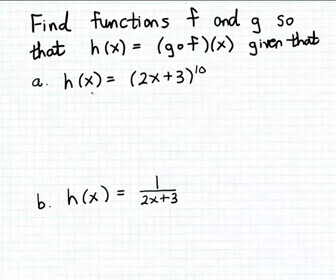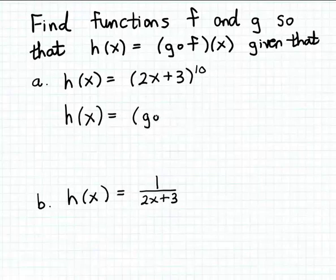So let's start with example a. We have a function named h, and the formula for h is 2x plus 3 raised to the 10th power. What I want to find here are two functions f and g so that the formula for h will be the composition of these two functions f and g. I'll have to make up formulas for f and g so that when I compose g with f, I'll get the formula for h.